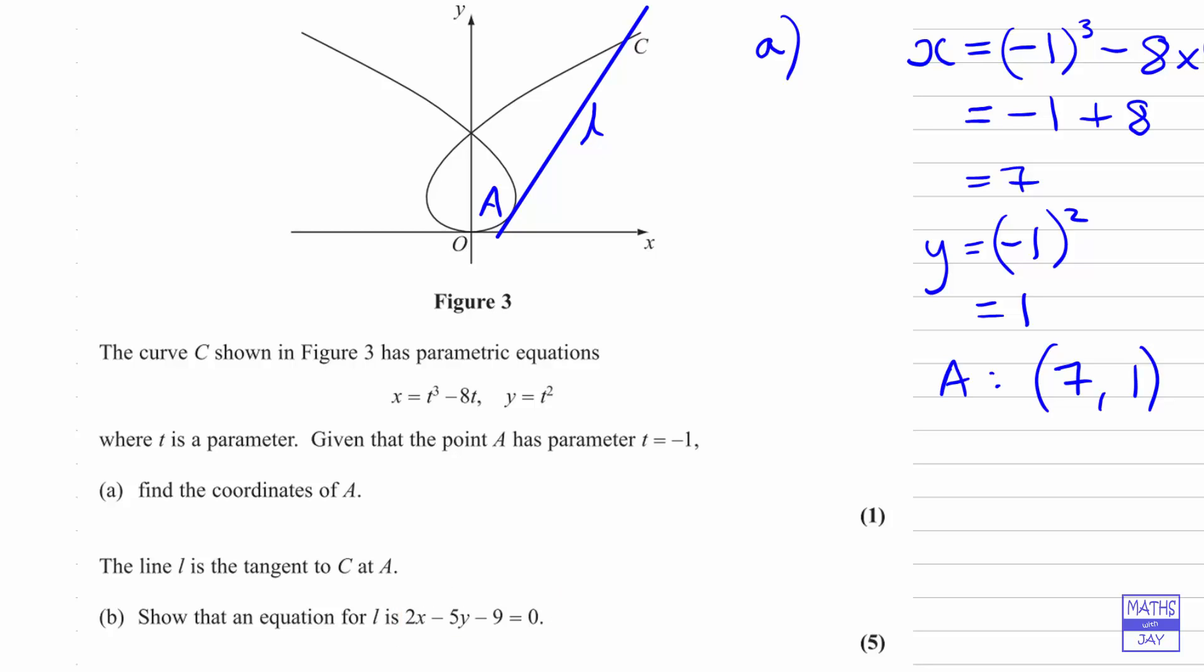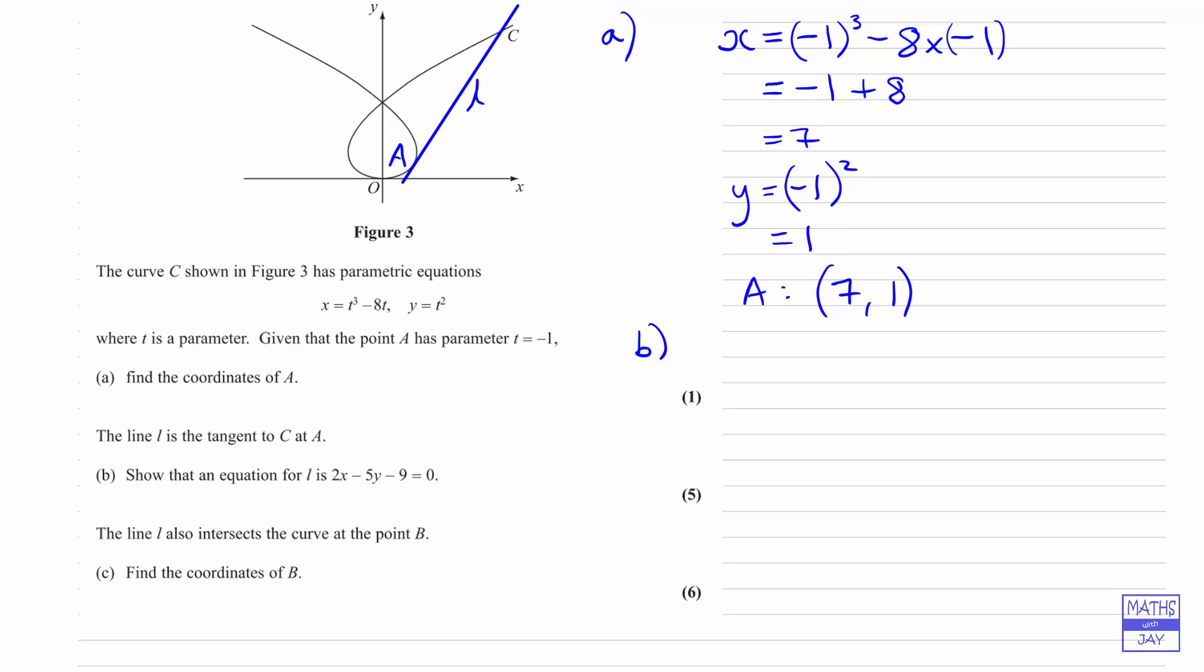Because we've got parametric equations, we're going to use parametric differentiation. We know that dy by dx, the gradient, equals dy by dt divided by dx by dt. So we need to find dy by dt and dx by dt, but we have x and y in terms of t, so that should be no problem.